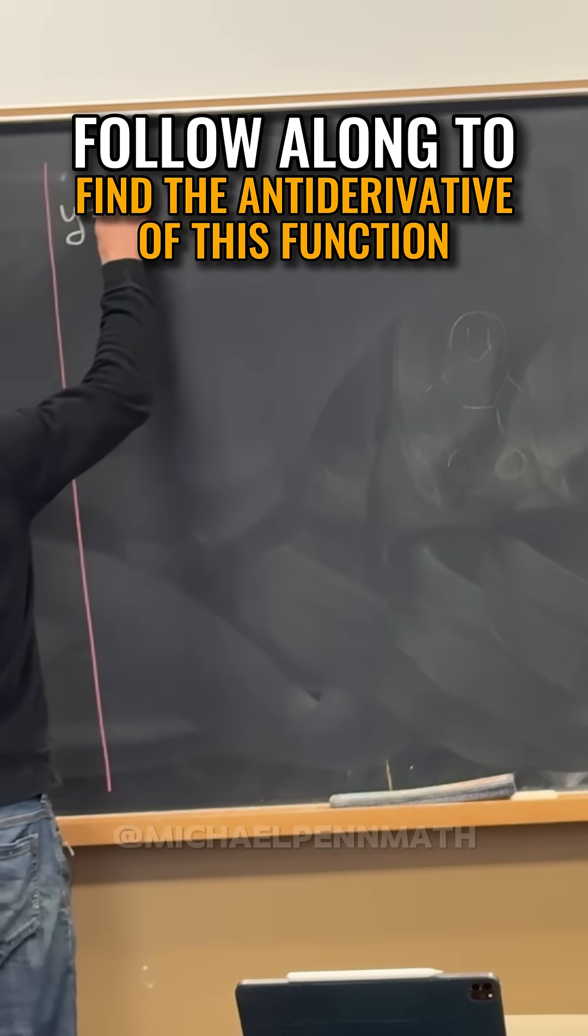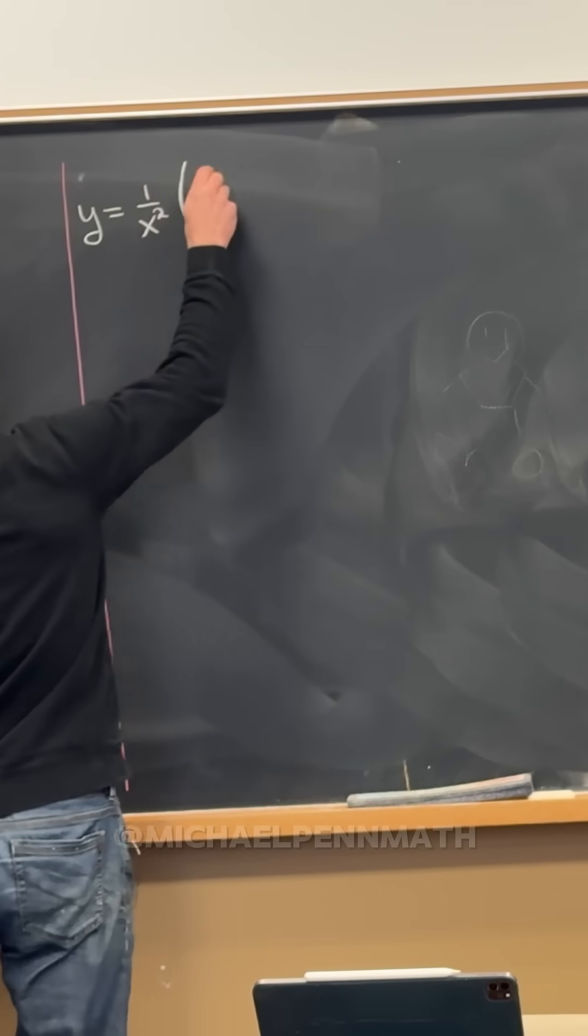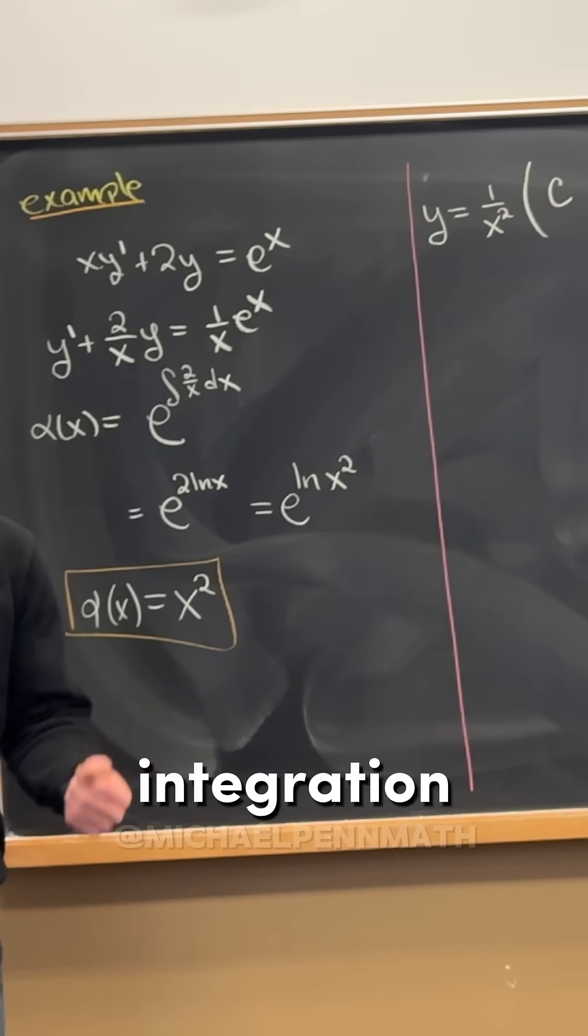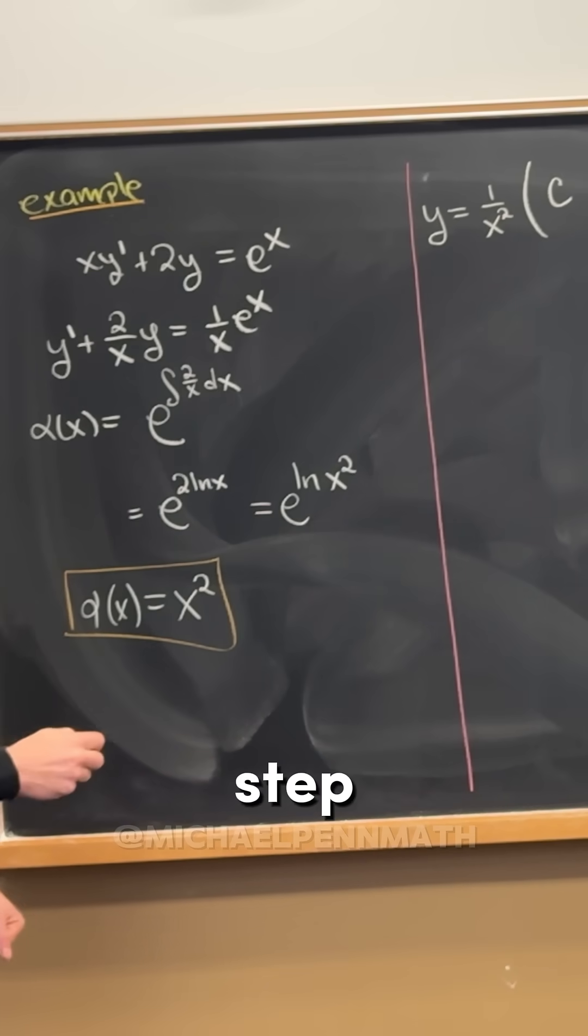So observe that y is going to be 1 over x squared because it's 1 over an integrating factor. And then we have our constant of integration, which came from another step here.